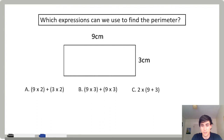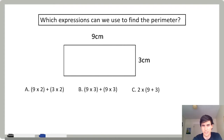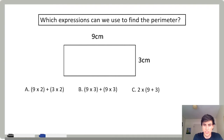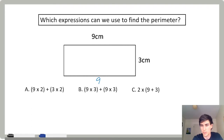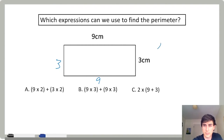This is a question that you might see in your packet. Which expressions can we use to find the perimeter? An expression is like an equation, but without an equal sign. We've got a rectangle where one side length is nine centimeters and the other is three centimeters. Centimeters are also a measure of length — they're pretty small. Opposite sides of rectangles are equal, so I'll just add them all up: nine plus nine plus three plus three.